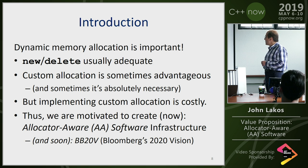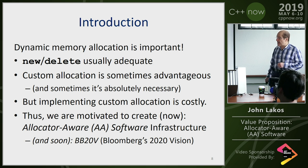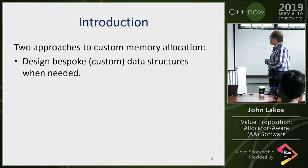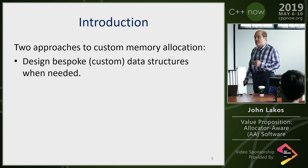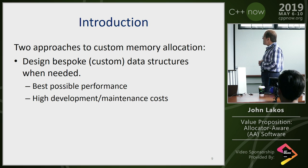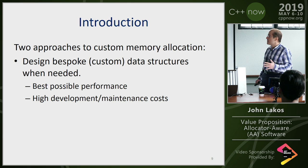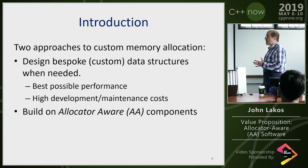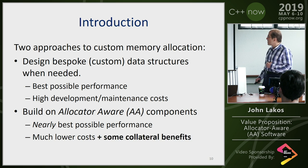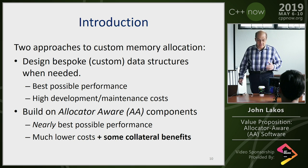Dynamic memory allocation is important. New and delete is usually adequate, but custom allocation is sometimes advantageous — and sometimes it's absolutely necessary. When you absolutely need custom allocation, you will make it happen regardless. But it's expensive to write your own data structures to achieve this kind of allocation. So we're motivated to provide allocator-aware infrastructure today, even though we don't have any magic that makes it free. There are two approaches: writing your own bespoke custom data structures gives the best possible performance at high development and maintenance cost; building allocator-aware components gives nearly the best performance at much lower cost, with some collateral benefits.